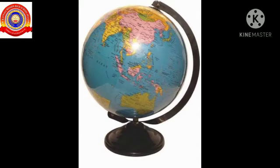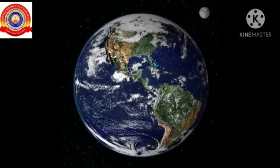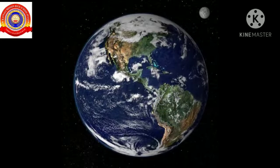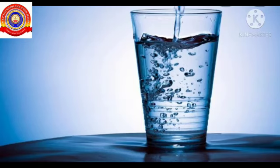Today we have to start a new lesson — The Earth. What do you know about the earth? What's the specialty of the earth? The shape of the earth is spherical. The earth consists of land, air, water, and life. The land contains mountains, valleys, and flat areas.